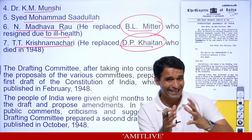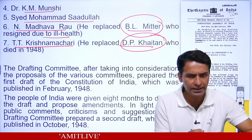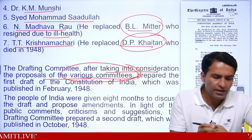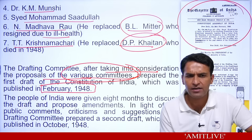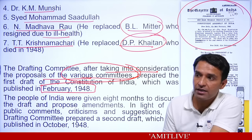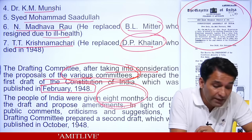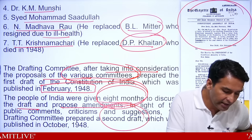The Drafting Committee's purpose was to make a basic draft of what the constitution should be. After considering proposals of various committees, they prepared a draft in February 1948 — the first draft of the Indian constitution — and published it in the Gazette of India. Indians were allowed to read the draft constitution and send suggestions to include or delete something. People of India were given 8 months to discuss the draft and propose amendments. Based on those public comments, criticism, and suggestions, the Drafting Committee made a second draft, published in October 1948.